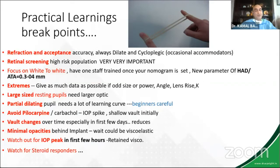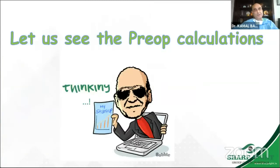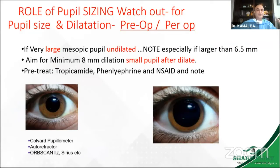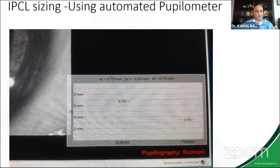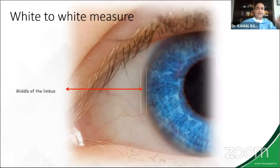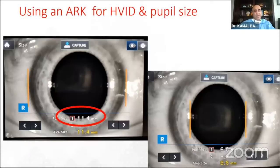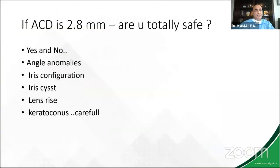Watch out for IOP peaks — these patients are highly susceptible to being steroid responders. They can have an IOP peak within the first two days, possibly from viscoelastic, or an IOP peak after five to six days if they are steroid responders. Cycloplegic refraction is very important. Measuring dilated and undilated pupil is very important — note it in your file. You can use dynamic pupillometry; I use it on my Sirius machine. If using a caliper, always use the outer limbal line, or you can use your autorefractor-keratometer.